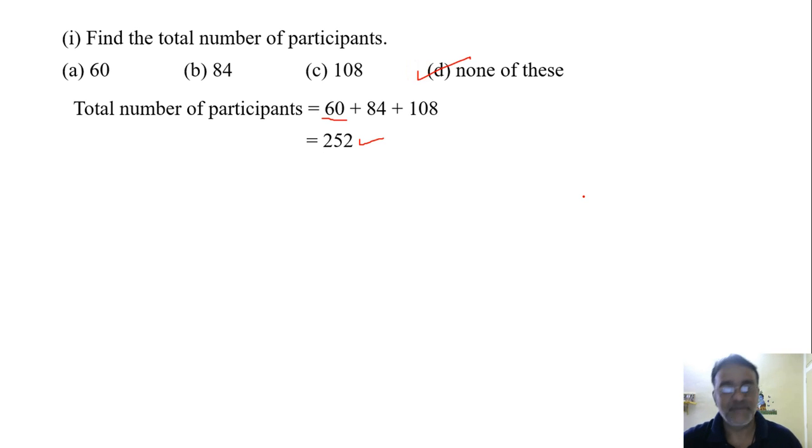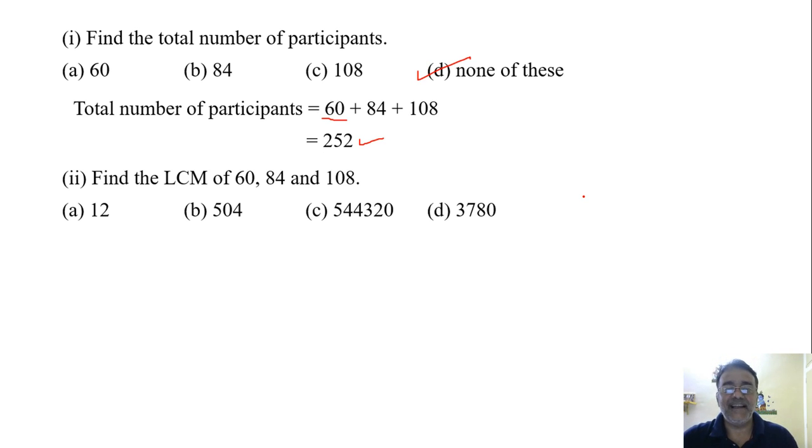Now second question: find the LCM of 60, 84, and 108. Let's factorize. 60 divided by 2 is 30, again divided by 2 is 15. 15 we can write as 5 × 3 or 3 × 5. So we get 2² × 3 × 5.